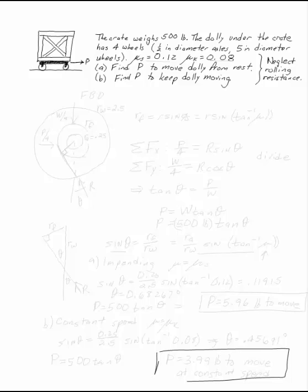The crate weighs 500 pounds, and the dolly under it has four wheels with half-inch diameter axles and five-inch diameter wheels. You've got a coefficient of static friction and a coefficient of kinetic friction. We're going to neglect rolling resistance and find how much we have to pull on it to start it moving, and then how much we have to pull on it to keep it moving once it's going.